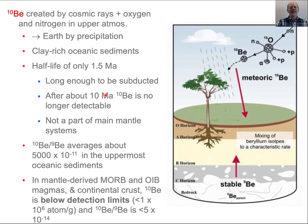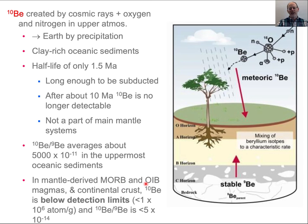Beryllium-10 tells us that if we can detect it, the process has to be occurring very quickly — on million-year timescales, not tens of millions of years. It's also an important tracer because Be-10 is not present in mid-ocean ridge basalt, ocean island basalts, or continental crust — it's only in the sediment. So it's a tracer of the sediment component, which tells us sediments must be involved in this process.